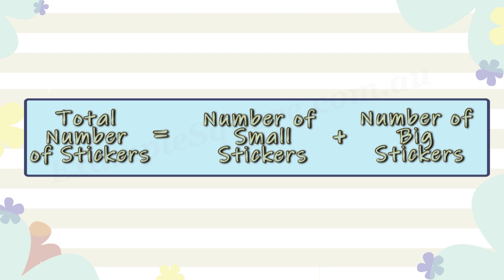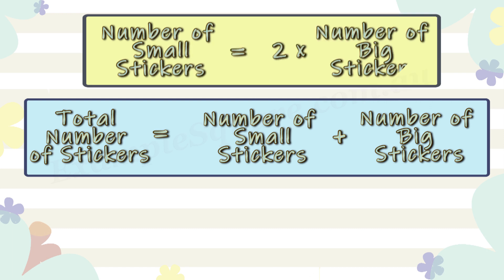The number of small stickers is equal to 2 times the number of big stickers. Since the total number of stickers equals the number of small stickers plus the number of big stickers, and the number of small stickers equals 2 times the number of big stickers, we can substitute.